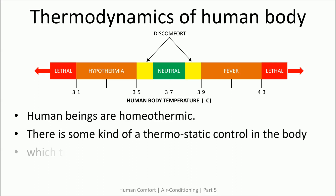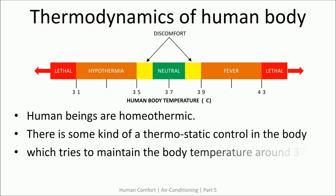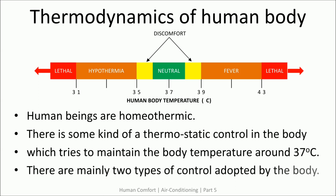Human beings are homeothermic — that is, regardless of external influence, a stable internal body temperature is maintained. In the case of humans, this temperature is 37 degrees Celsius.